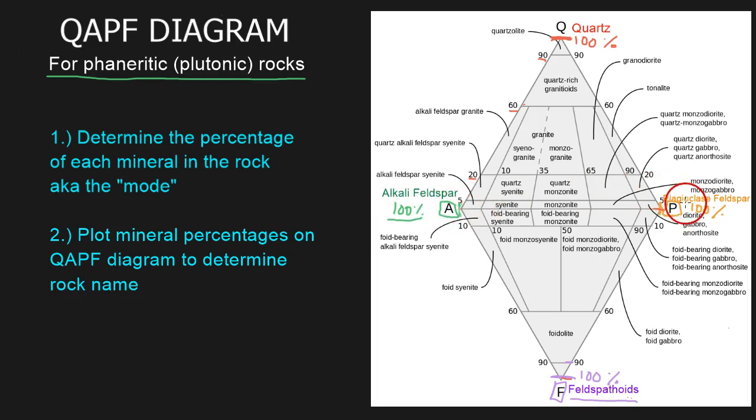Let's look at the alkali feldspar and plagioclase line. If a hundred percent alkali feldspar is at this apex, zero percent will be at the plagioclase feldspar apex. Conversely, a hundred percent plagioclase feldspar is at this apex, so zero percent will be at the alkali feldspar apex. Plagioclase increases in this direction, and alkali feldspar increases in the opposite direction. These lines represent the percentage of either plagioclase or alkali feldspar.